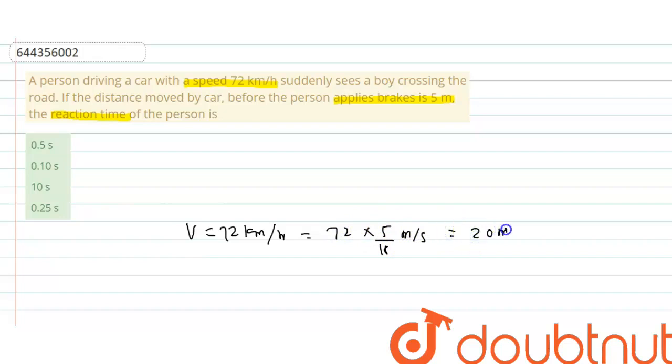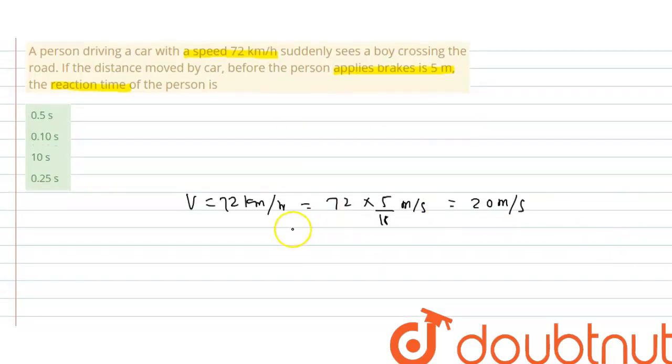And before applying brake, car moves 5 meter. So time taken by car to move 5 meter is distance traveled divided by speed, which is 5 divided by 20 meter per second.